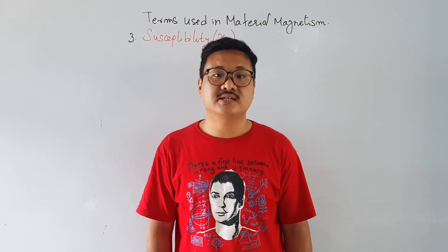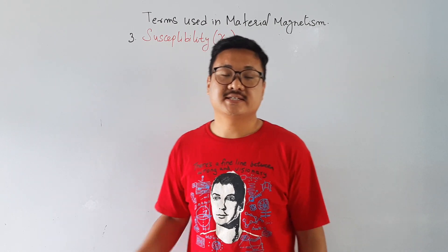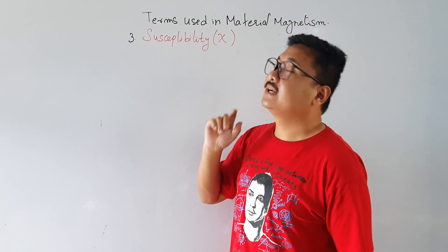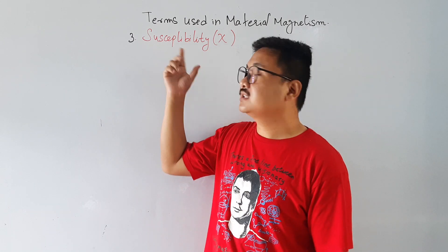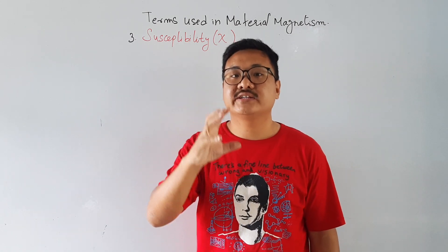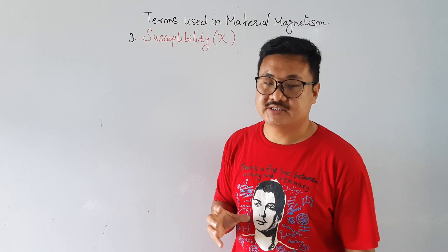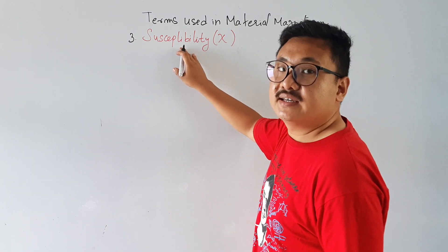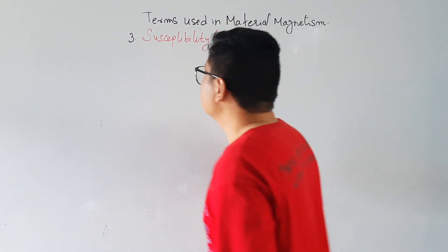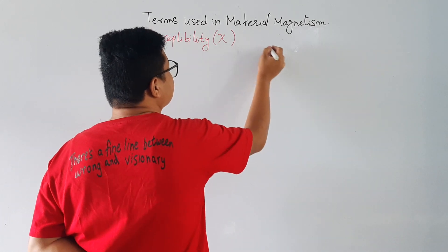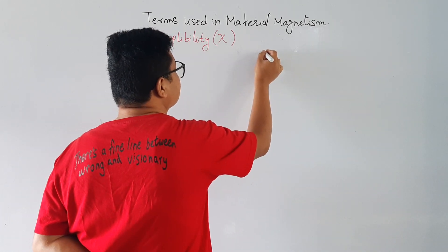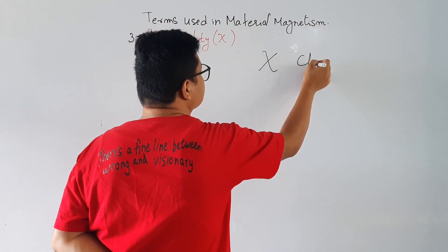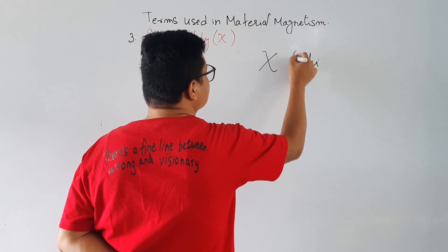Today we study the term susceptibility used in magnetic material. The term susceptibility is very important. The susceptibility is denoted by the symbol called Chi. This symbol is something like this, and this is Chi.